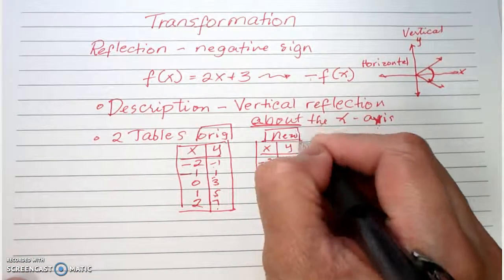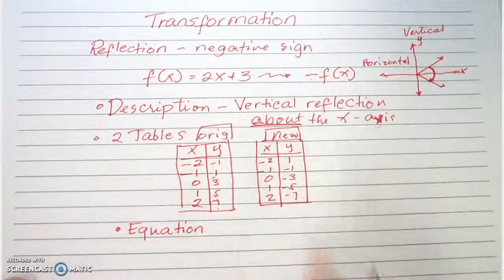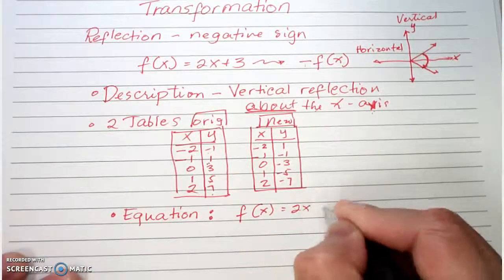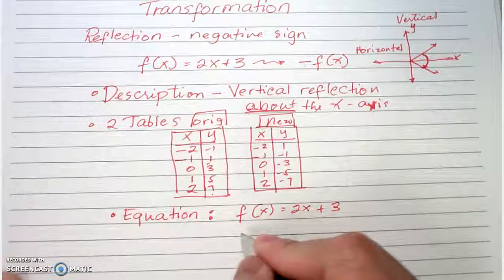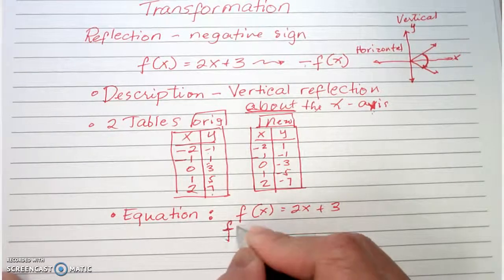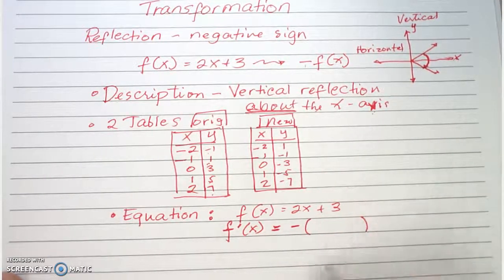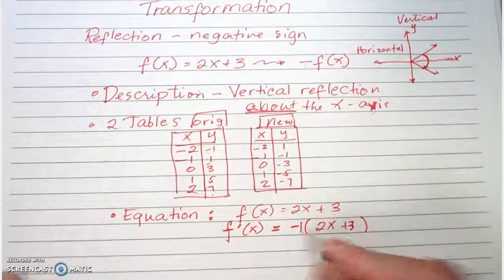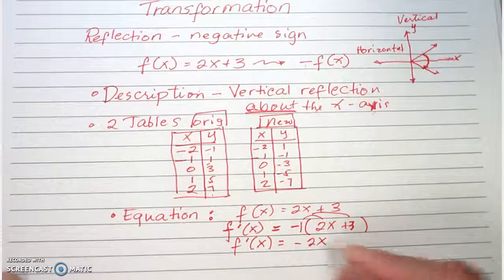Next, you come up with the equation. The original is f(x) = 2x + 3. The transformed function, f'(x), has a negative outside, so it is negative f(x). Since f(x) is 2x + 3, we substitute that in: f'(x) = -(2x + 3). Distributing the negative one gives the transformed function: f'(x) = -2x - 3.